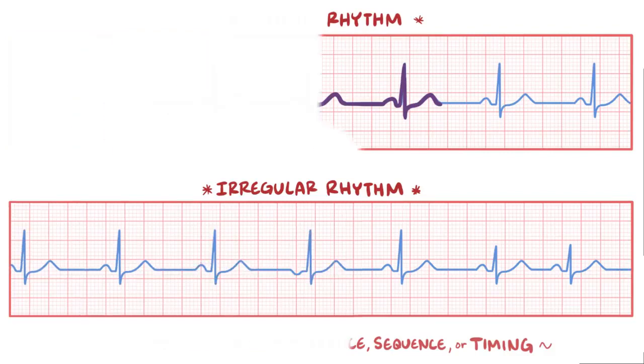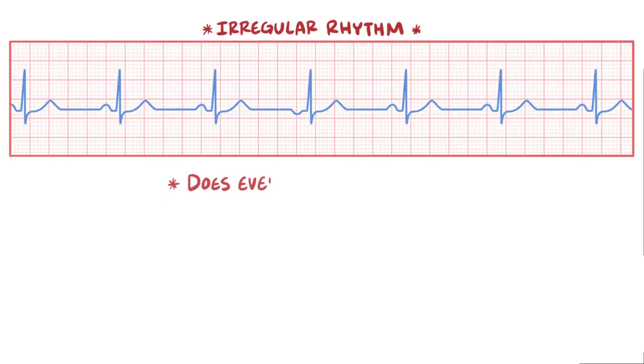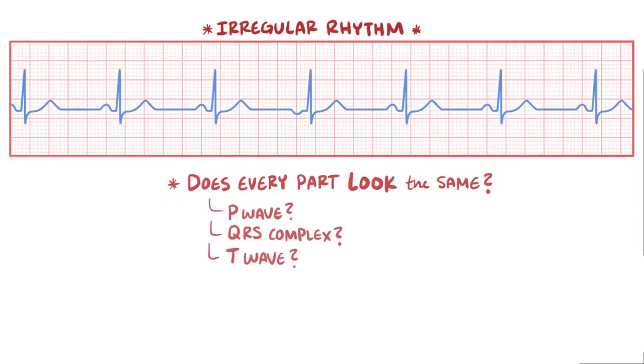To help identify an irregular rhythm, you could look to see if every part of the waveform looks exactly the same, which would include the P wave, the QRS complex, and the T wave. If not, it could mean that there's an ectopic beat, meaning that it might have originated from an abnormal spot in the atria or ventricles.